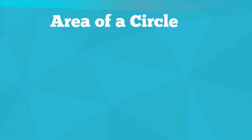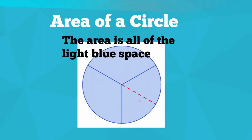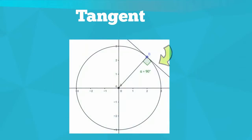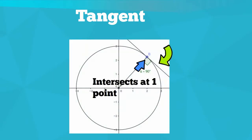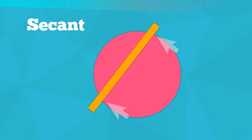The area is the amount of space inside the circle. A tangent is a line that intersects the circle at one point. A secant is a line that intersects the circle at two points.